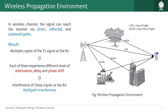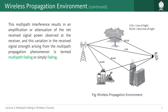At the receiver all these different versions of the signals arrive at the same time and interfere, which we call multipath interference. Because of this multipath interference, the net received signal can experience either amplification or attenuation based on the situation of our wireless channel. This variation of the received signal strength due to multipath components is termed as multipath fading, or simply fading.